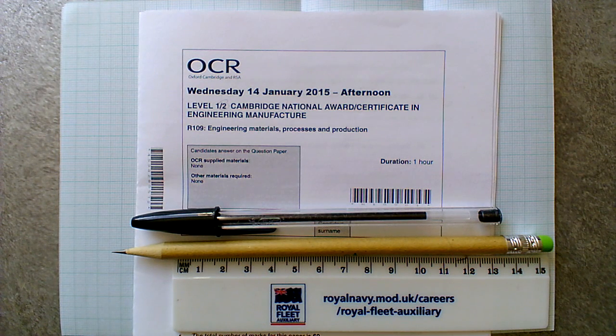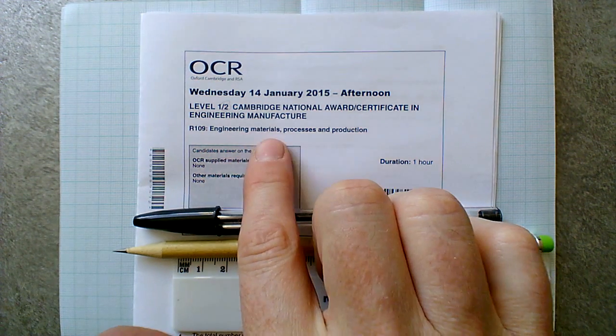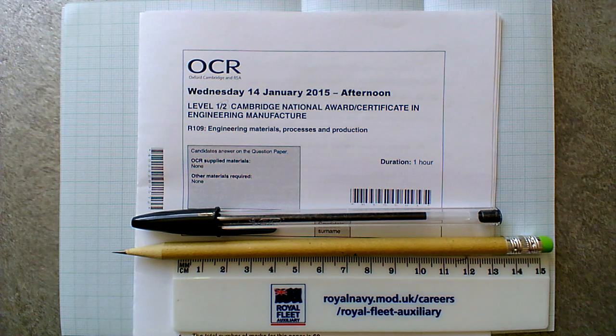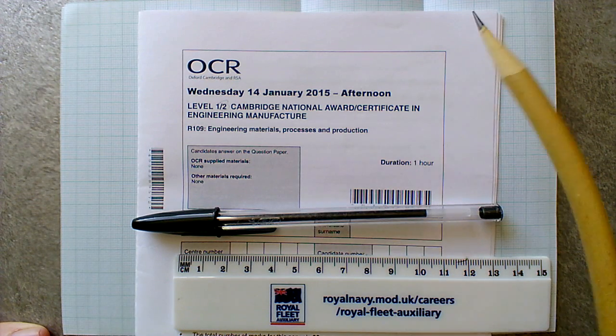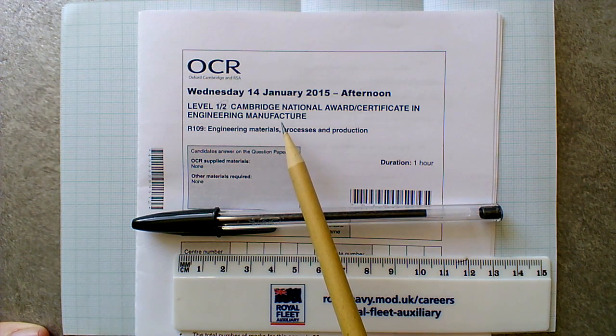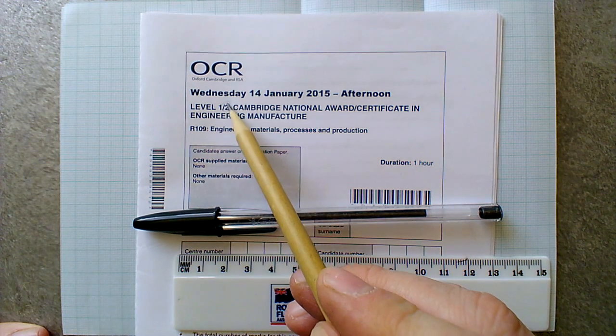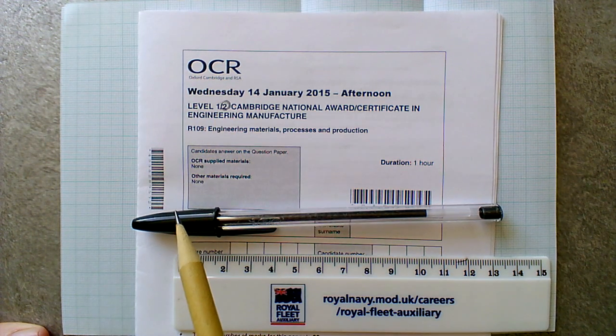Hello, and welcome to the Cumber UTC revision sessions for R109 Engineering Materials, Processes and Production. This is a Level 1 and Level 2 Cambridge National Award Certificate in Engineering Manufacturing. Notice that it's Level 1 and 2, and you're going to be looking for at least 36 marks on this paper to get yourself your Level 2 qualification.